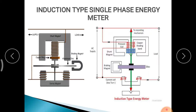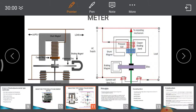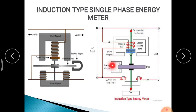The braking system consists of one permanent magnet known as the braking magnet, placed near the edge of the aluminium disc. This magnet is used to control the speed of the disc — without it, the disc would rotate continuously and very fast.